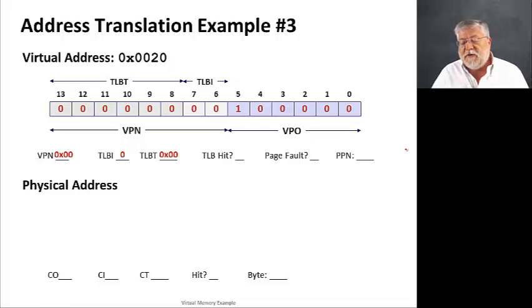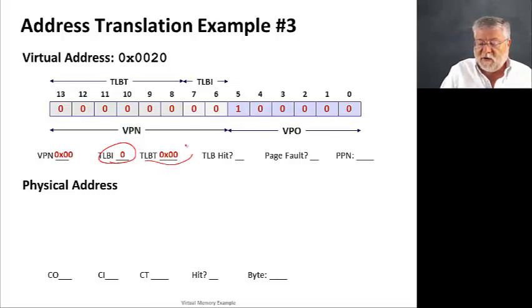Let's take a look at a third example. This time, the address 0020 hex. And, again, here we're looking at a TLB index of 0 and a TLB tag of 00. If we go look in the TLB, we'll see that this is also a TLB miss. The valid bit is set to 0 for this particular entry.